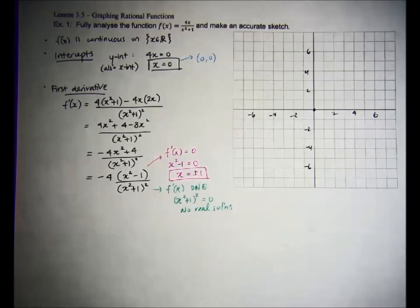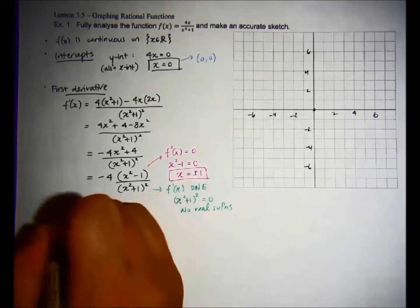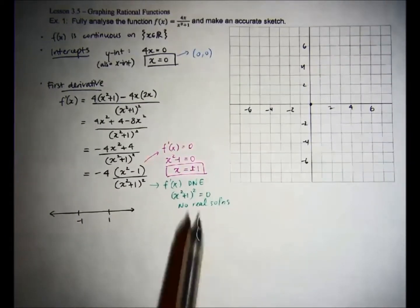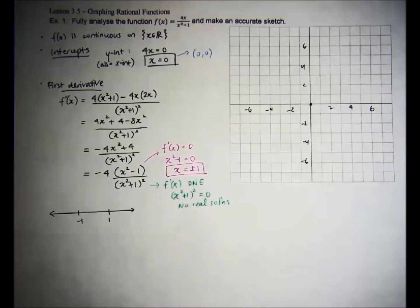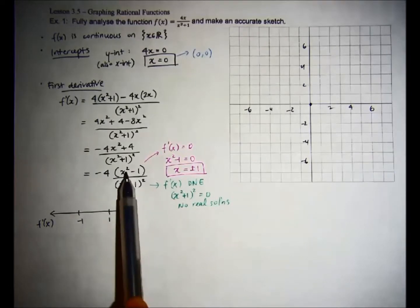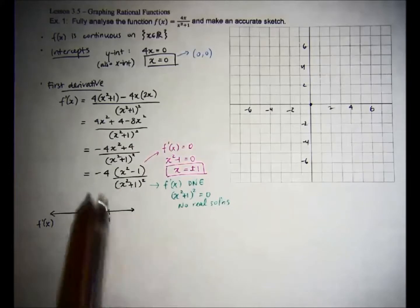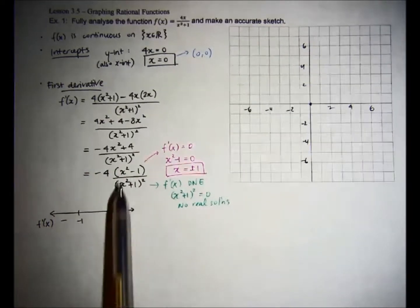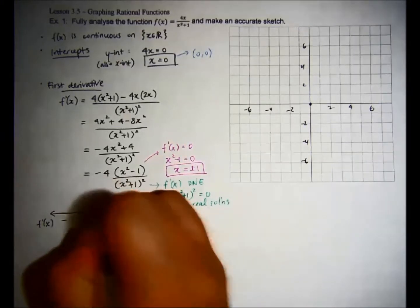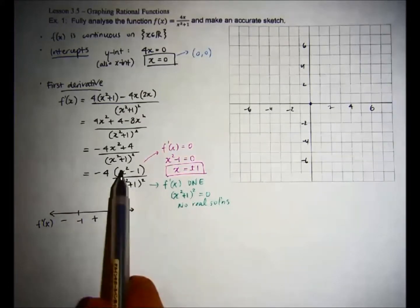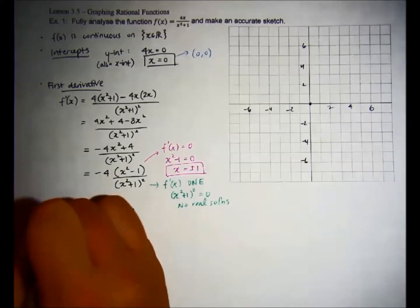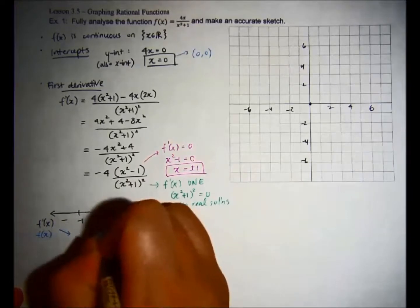Now I'm going to use a number line to get a clear idea of whether my function is increasing or decreasing. When I take a number smaller than negative 1, square it and subtract 1, that's positive, times negative 4, so negative — function is decreasing. Between negative 1 and positive 1, using 0 gives negative times negative, so positive — increasing. A number greater than 1 gives positive times negative — decreasing. So f of x is decreasing, then increasing, then decreasing.